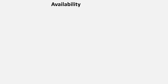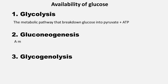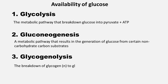The glucose is made available for the glycolysis pathway by extra blood glucose, glycogenolysis, or gluconeogenesis. Gluconeogenesis is a metabolic pathway that results in the generation of glucose from certain non-carbohydrate carbon substrates, for example amino acids and fatty acids. Glycogenolysis is the breakdown of glycogen into glucose-1-phosphate molecules.